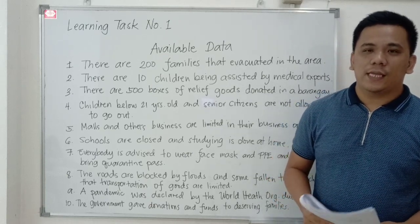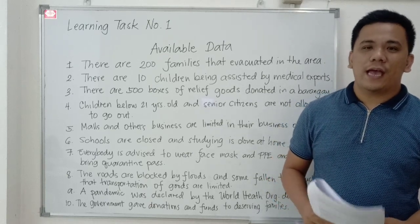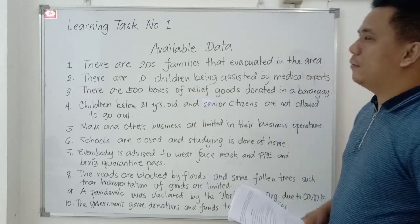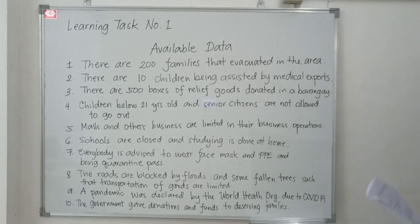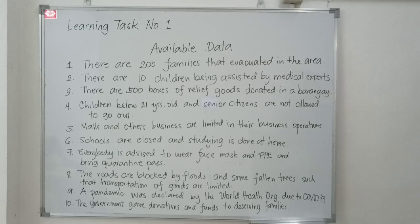Please allow me to read the content of our task. For Number One, these are the available data. Number one: there are 200 families that evacuated in the area. Number two: there are 10 children being assisted by medical experts. Number three: there are 500 boxes of relief goods donated in a barangay.